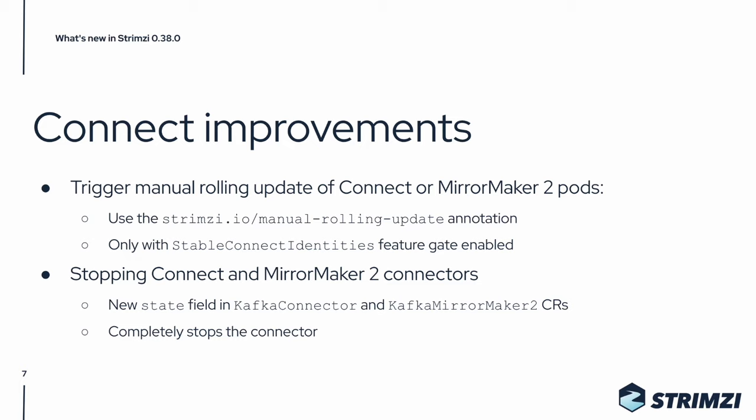We also added support for stopping Connect and Mirror Maker 2 connectors. This is a new feature supported from Kafka 3.5. You can stop the connectors using the new State field in the Kafka Connector and Kafka Mirror Maker 2 custom resources.